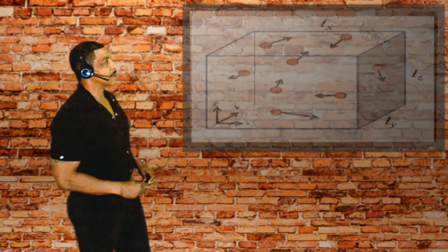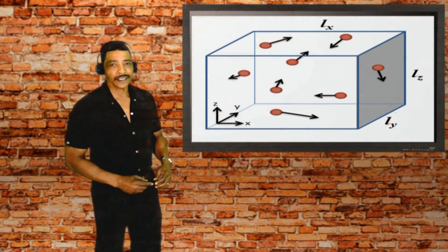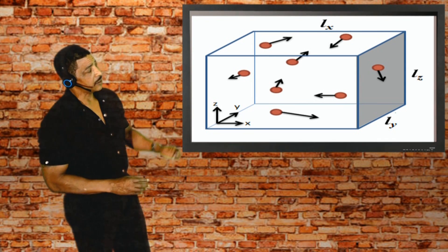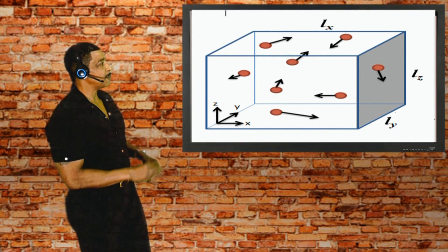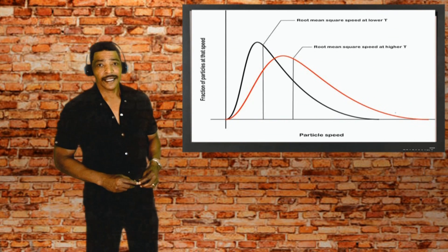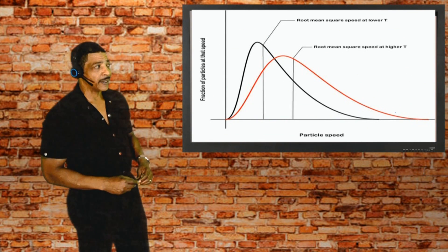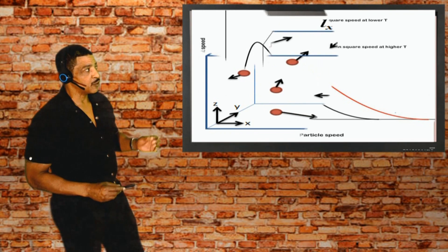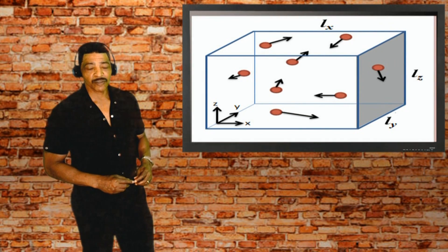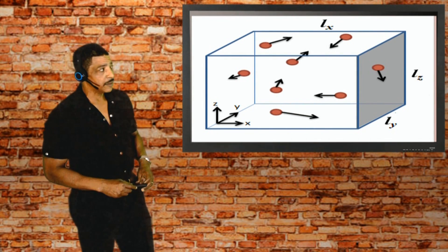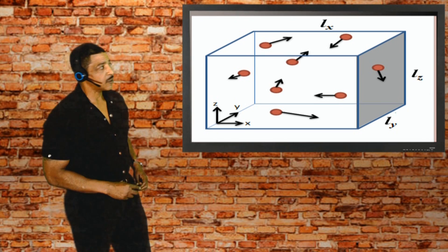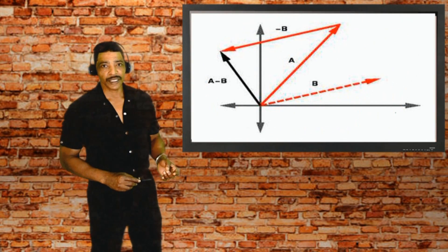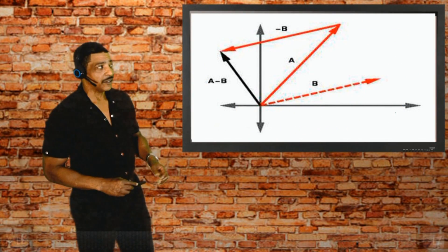Gas particles are in a state of constant random motion. At any temperature, particles move at different speeds, constantly colliding and changing directions. Therefore, we use velocity to describe the movement of these particles. Remember, velocity is a vector quantity, which takes into account both speed and direction.